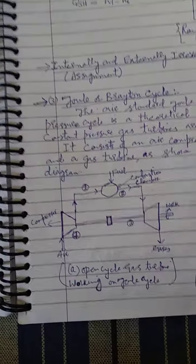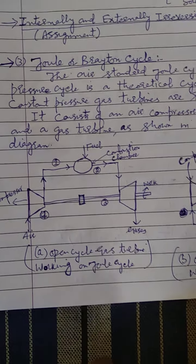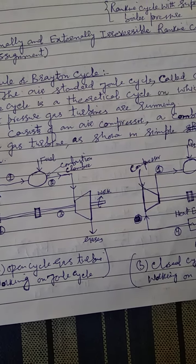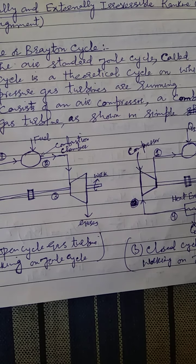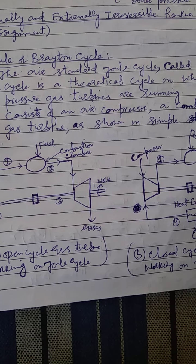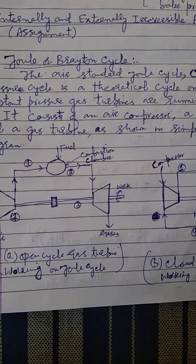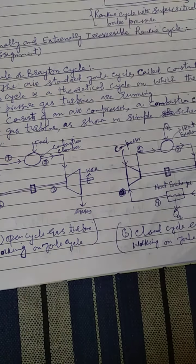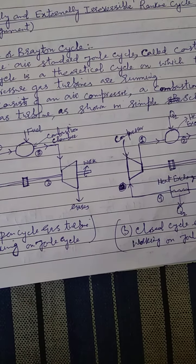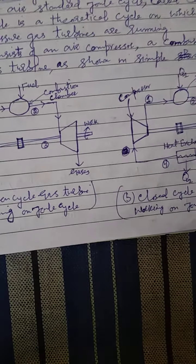Now we move to the Joule cycle or Brayton cycle. As mentioned, the Rankine cycle is used in steam turbines, while the Joule or Brayton cycle is used in gas turbines, applied in gas turbine power plants. The air-standard Joule cycle is a constant pressure cycle — a theoretical cycle on which constant pressure turbines operate. It is also called a constant pressure cycle, just like the Rankine cycle.